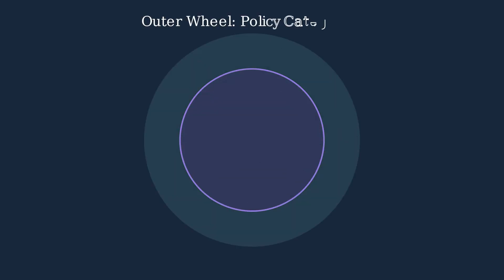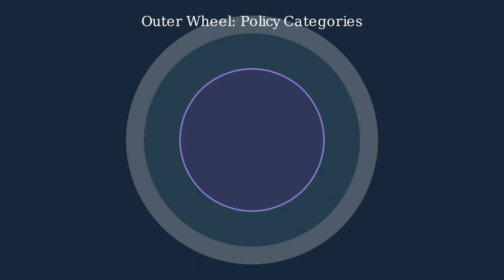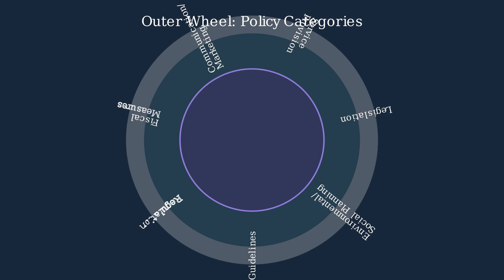The outer wheel of the behavior change wheel contains seven policy categories that can support behavior change interventions. These policy categories include guidelines, environmental and social planning, legislation, service provision, communication and marketing, fiscal measures, and regulation. In this section, we'll focus on guidelines, the first policy category of the behavior change wheel.